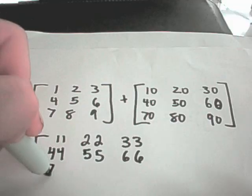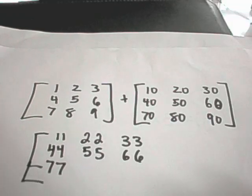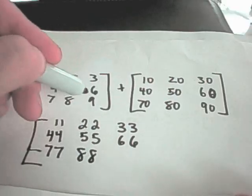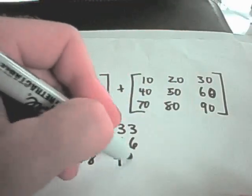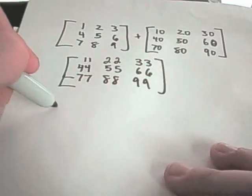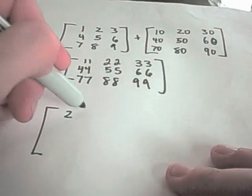7 plus 70 will give me 77. Should have made my matrix a little bigger. 8 plus 80 will give me 88. And lastly, 9 plus 90 will give me 99. Okay. They don't have to be the same size. Well, they have to be the same size, but they don't have to be square matrices.